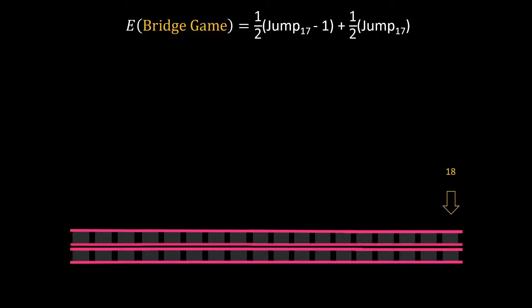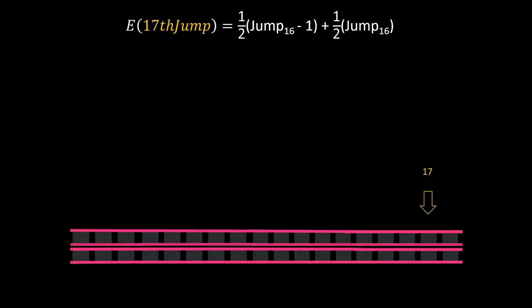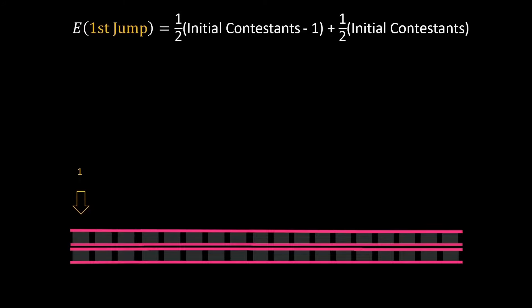Similarly the expected survivors after the 17th jump is this formula where we continue referencing the previous jump. We can then carry this logic throughout the whole bridge until we get to the start and once we get to the start we can finally get some concrete numbers.